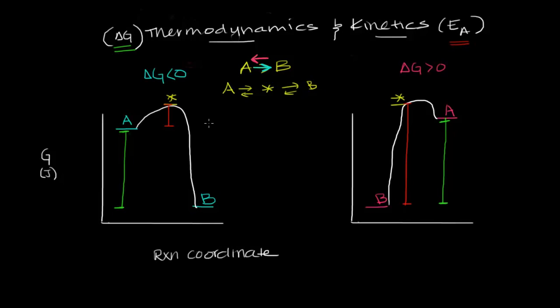We all know that gravity will make a ball roll down a hill just like a negative delta G value is telling us that the reaction is very thermodynamically favorable. But we need to sometimes give the ball a push in order for the reaction to occur.